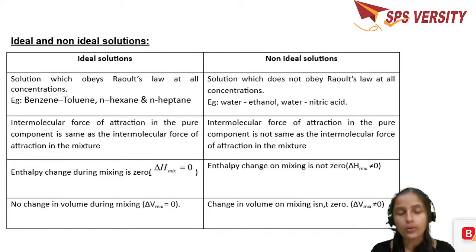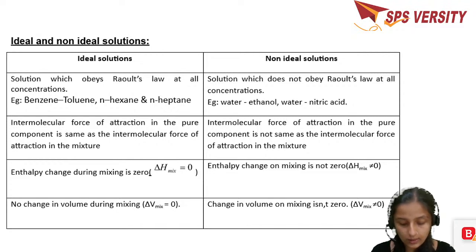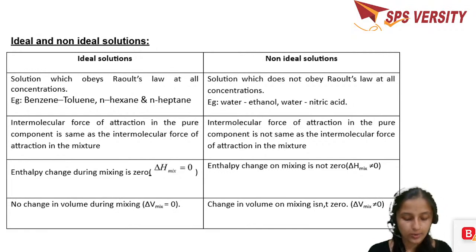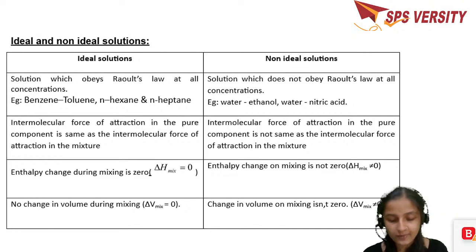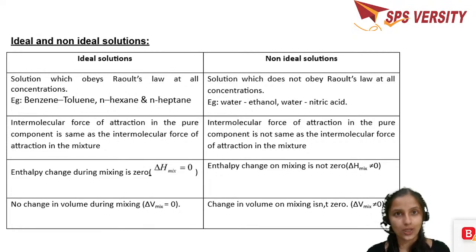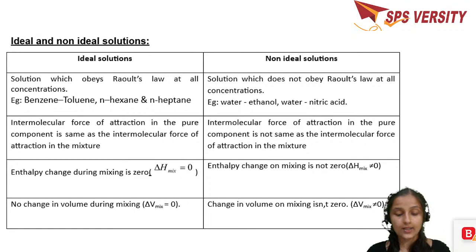Now we move to ideal and non-ideal solutions. Just as an ideal gas obeys the ideal gas equation, an ideal solution is one which obeys Raoult's Law at all concentrations. If Raoult's Law is obeyed at all concentrations, it is called an ideal solution. If it doesn't obey Raoult's Law, it is called a non-ideal solution.